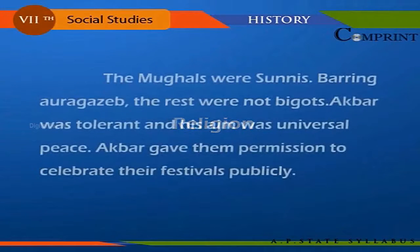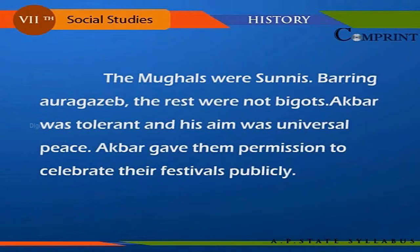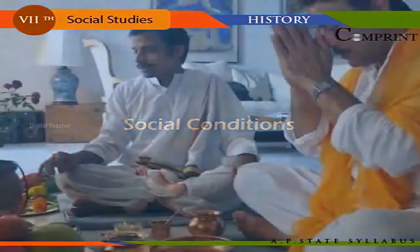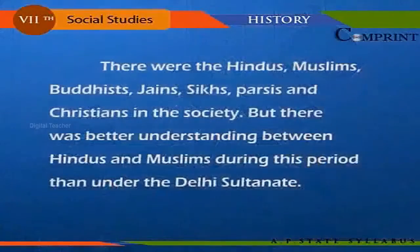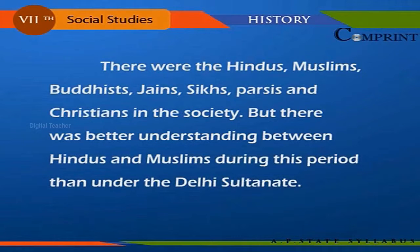Religion and Social Conditions. The Mughals were Sunni Muslims, excepting Aurangzeb who was bigoted. Akbar was tolerant and his aim was universal peace. Akbar gave people permission to celebrate their festivals publicly. Hindus were the majority in the society. Casteism with its subdivisions got deep-rooted in the society; the people at the lower strata were the untouchables. There were Hindus, Muslims, Buddhists, Jains, Sikhs, Parsis, and Christians in the society. There was better understanding between the Hindus and Muslims during this period than under the Delhi Sultanate.